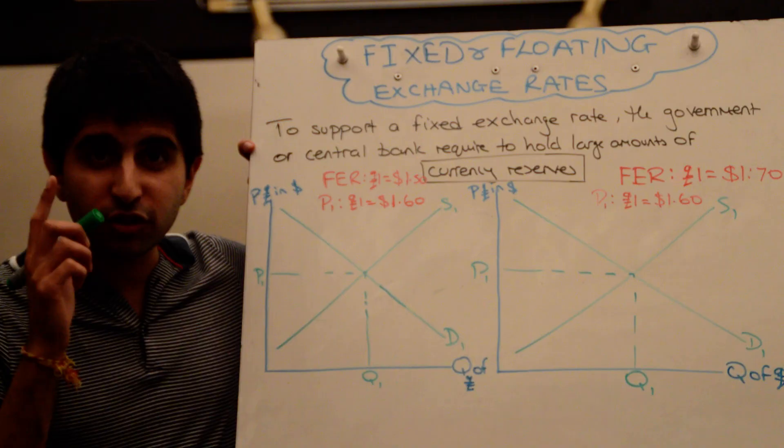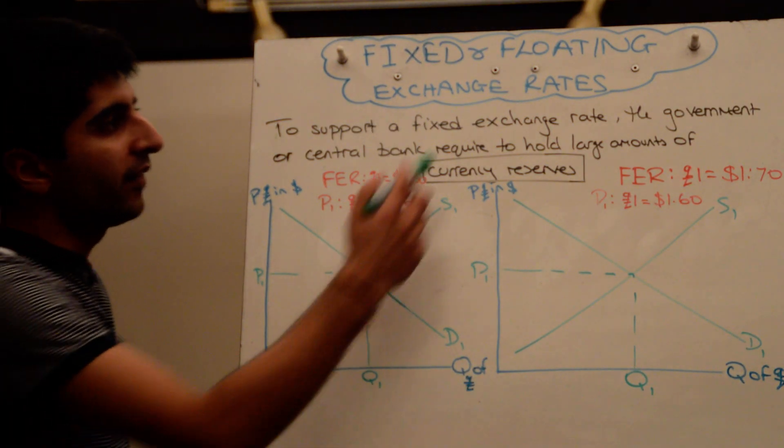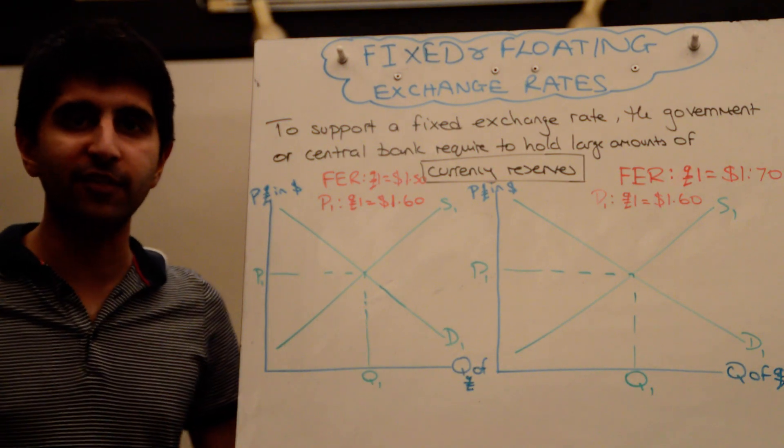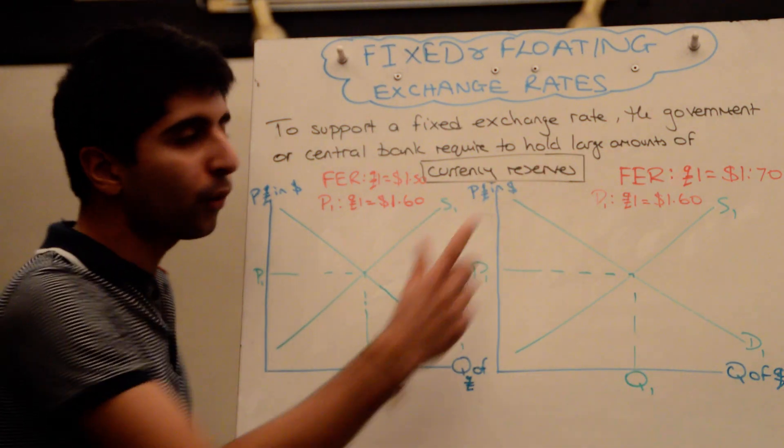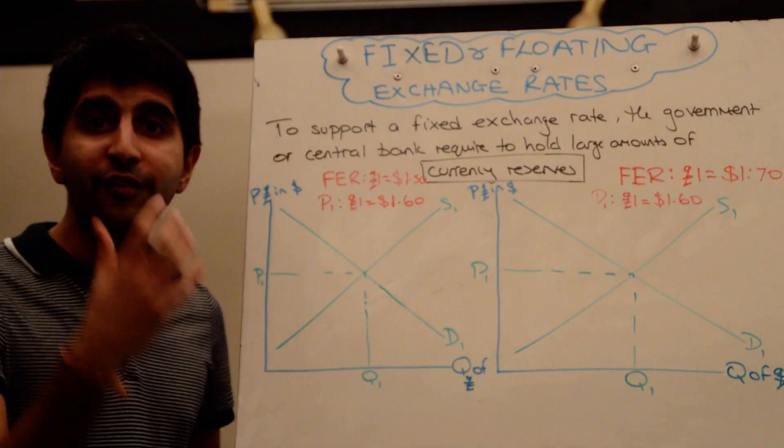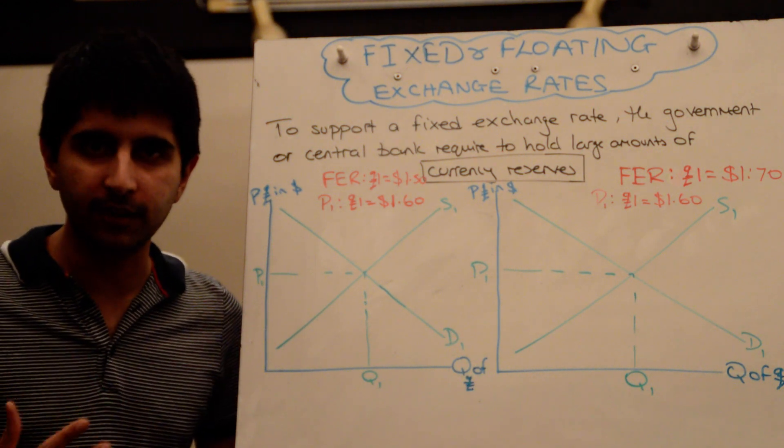First of all, for a fixed exchange rate to be maintained, for it to actually work, the government or the central bank, whoever is in charge of maintaining the fixed exchange rate, needs to hold large amounts of domestic currency reserves, but also foreign currency reserves, to manipulate demand and supply of the domestic currency.